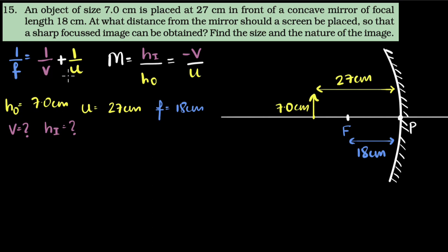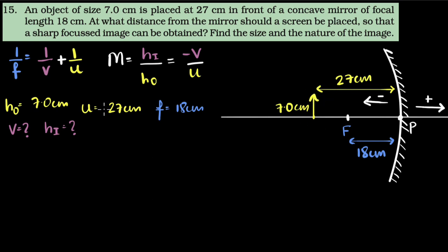No — you can only use this formula by using sign conventions. All these numbers have a sign. When you draw, always draw with the object to the left of the mirror. That's the first step. The second step: choose all distances to the right side of the mirror as positive, and all distances and positions to the left side of the mirror as negative. In our case, the object is to the left, so that's a negative distance. Focus is also on the left side of the mirror, so that is a negative distance.